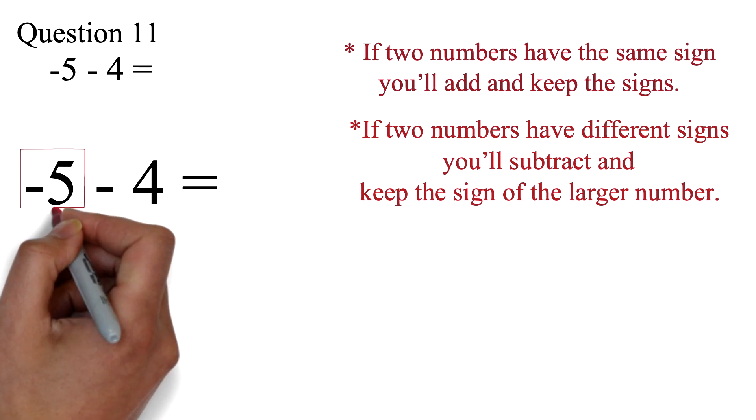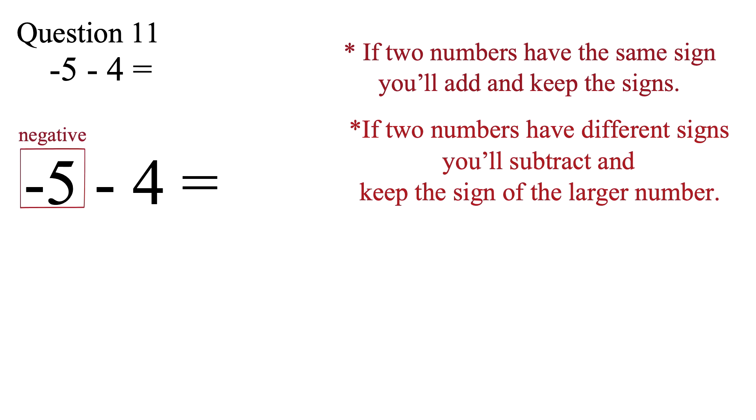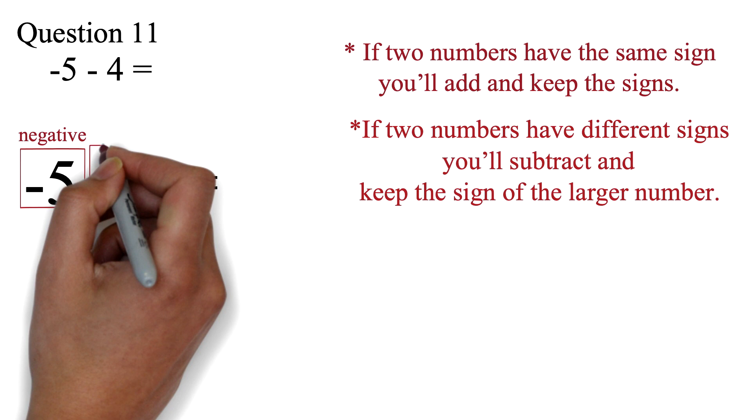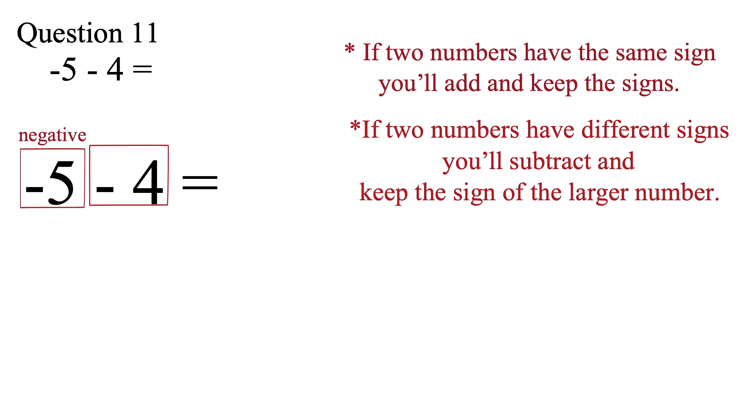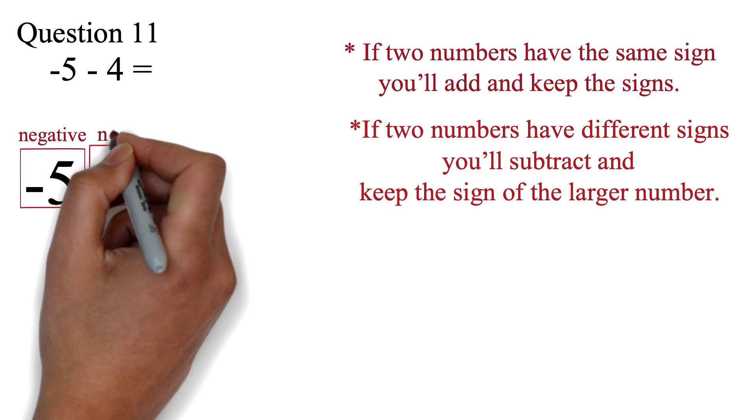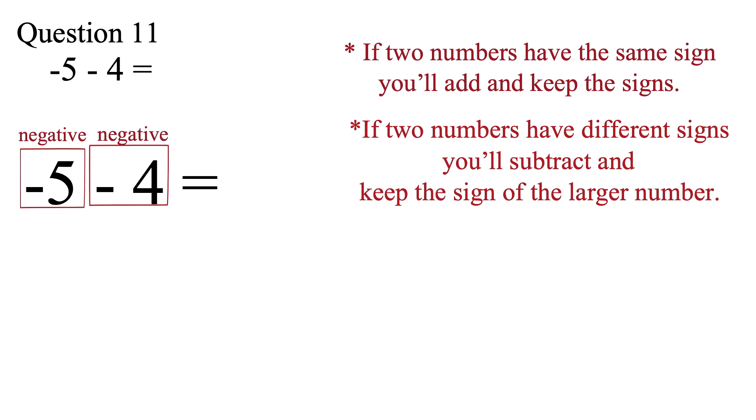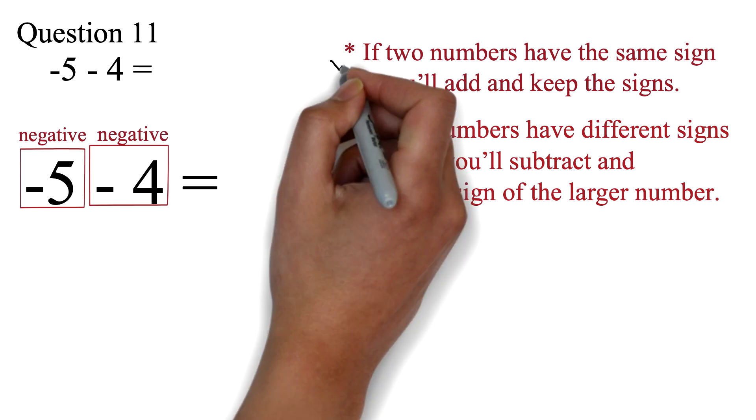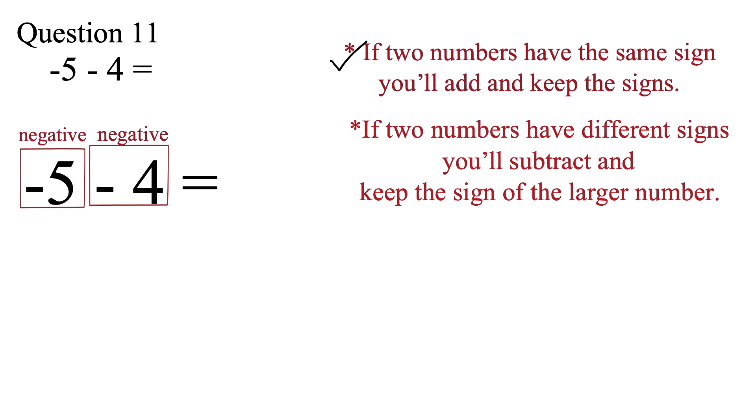So for this question, the 5 is negative. Please note that the middle sign is considered the sign of the number after it. So the sign of 4 is also negative. So they have the same signs. We said that if they have the same signs, you'll add them and keep the sign. So we have 5 plus 4, which is 9, and we bring the sign negative to get negative 9 as our answer.